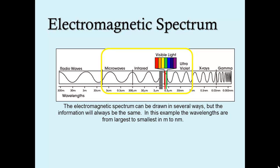The electromagnetic spectrum can be represented in many different ways, but the information is always the same. In this example, the wavelengths are shown from largest to smallest and measure from meters to nanometers.